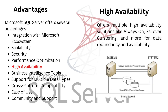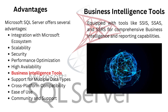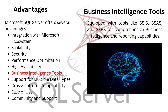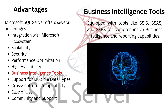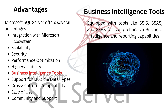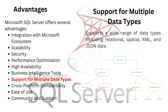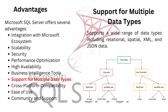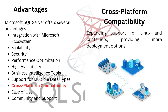High Availability offers multiple solutions like Always-On and Failover Clustering for data redundancy and availability. Business Intelligence Tools are equipped with tools like SSIS, SSAS, and SSRS for comprehensive business intelligence and reporting capabilities. Support for Multiple Data Types includes relational, spatial, XML, and JSON data. Cross-platform compatibility is expanding with support for Linux and containers, providing more deployment options.